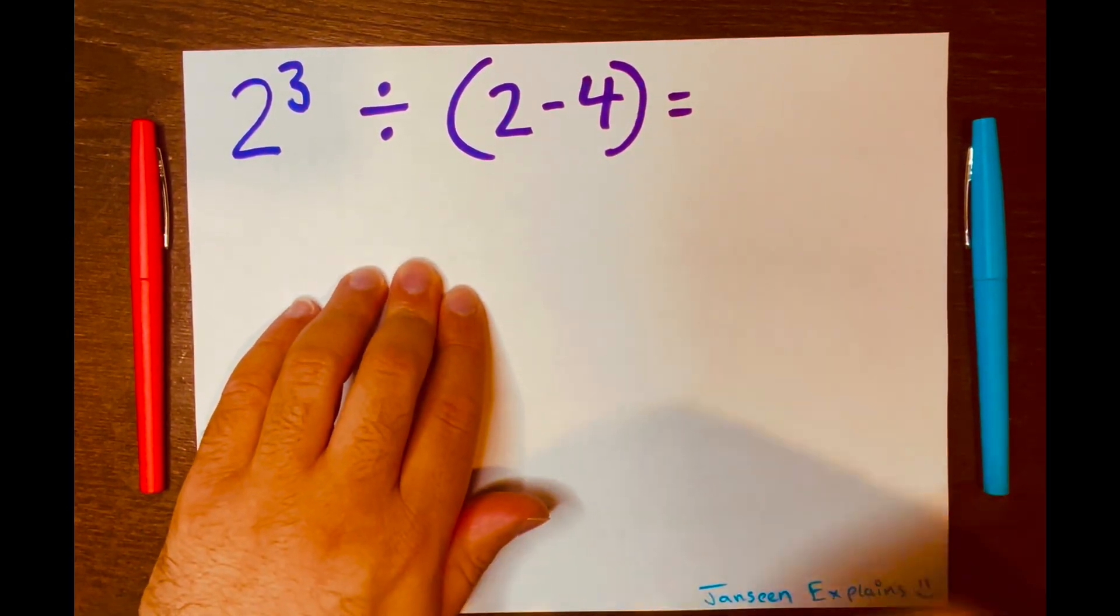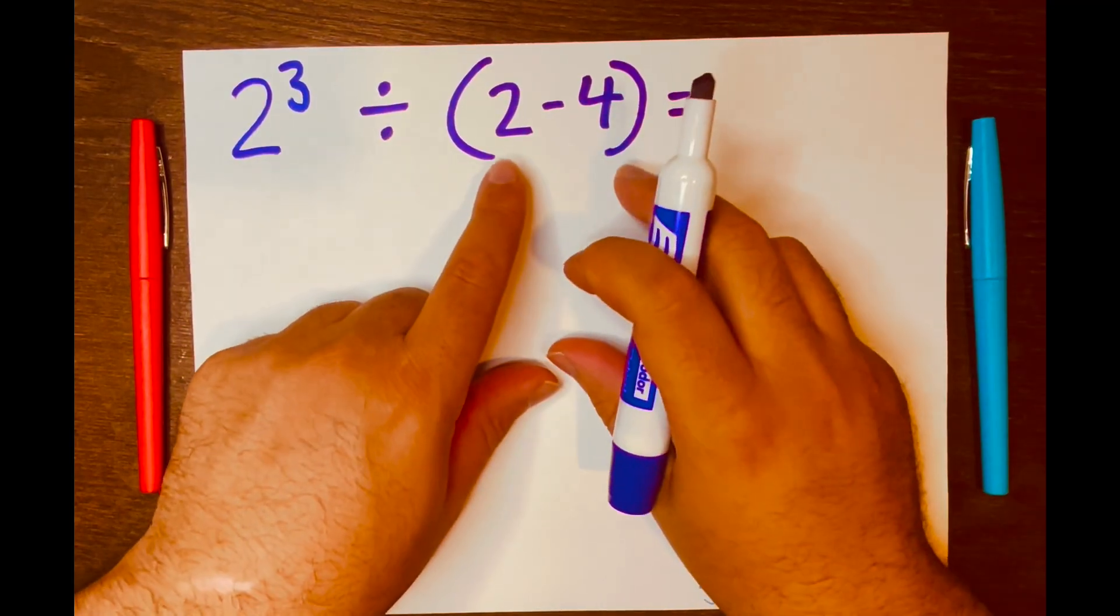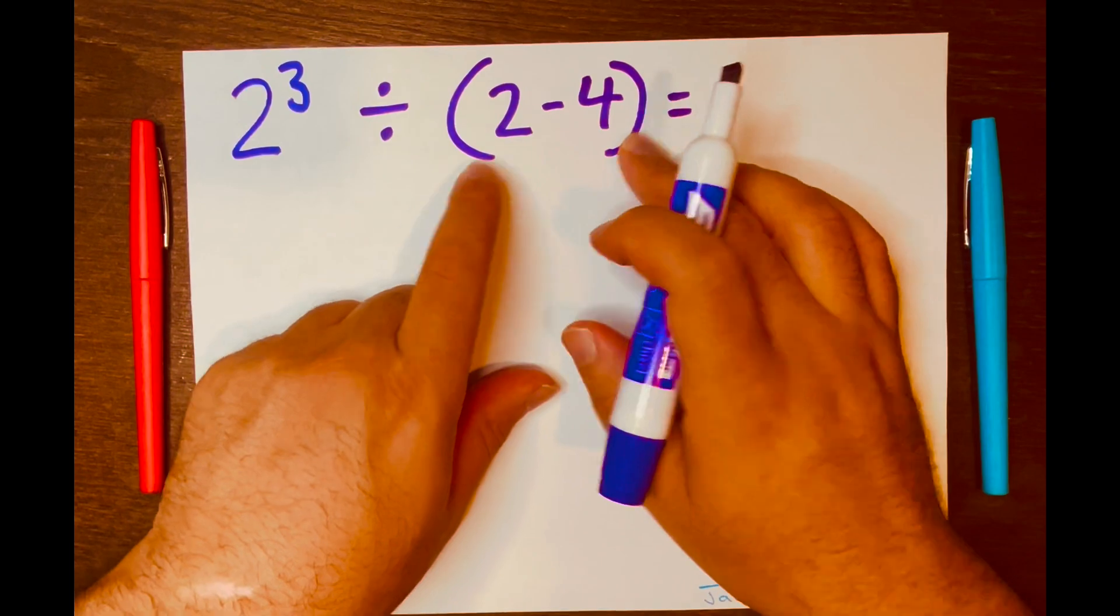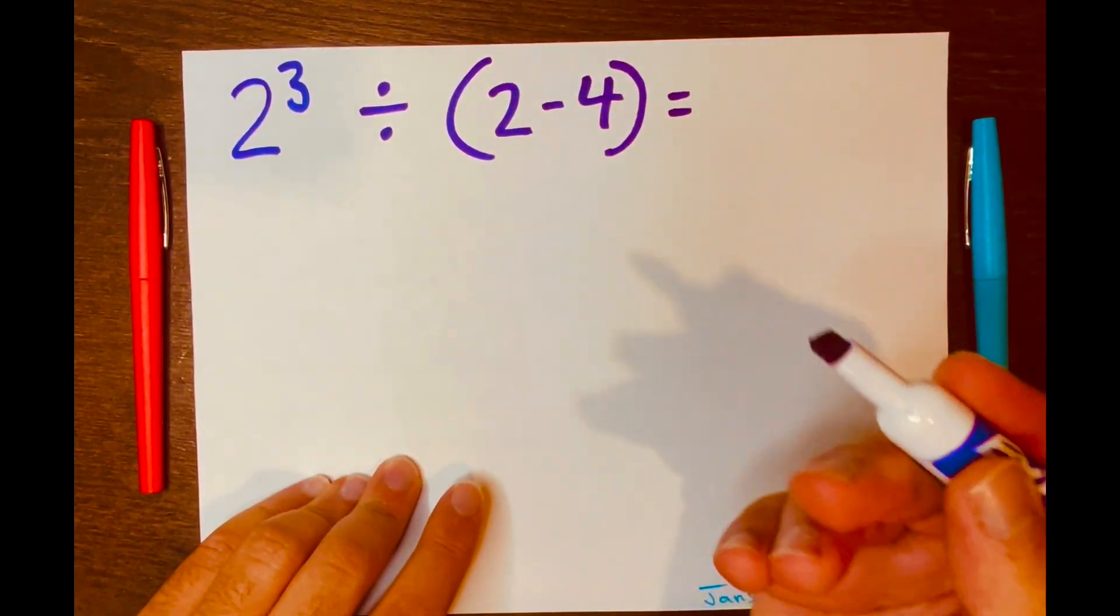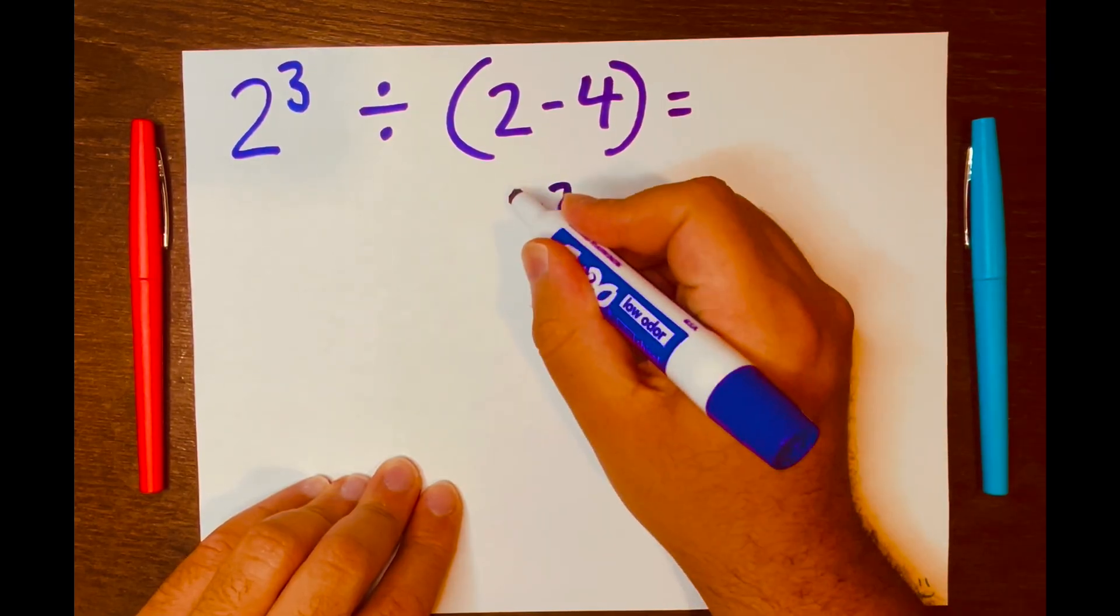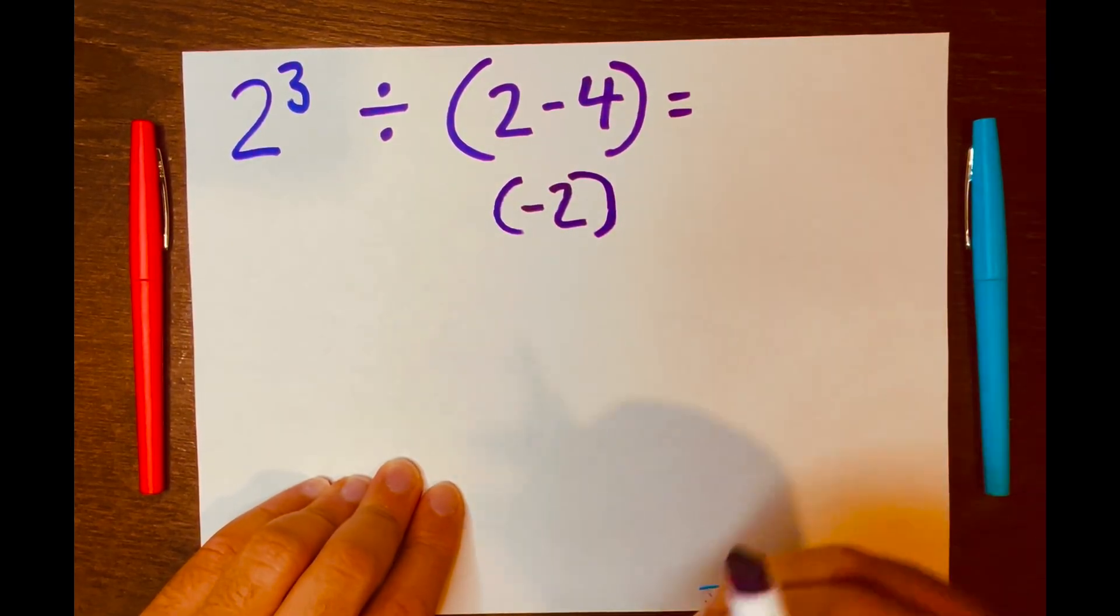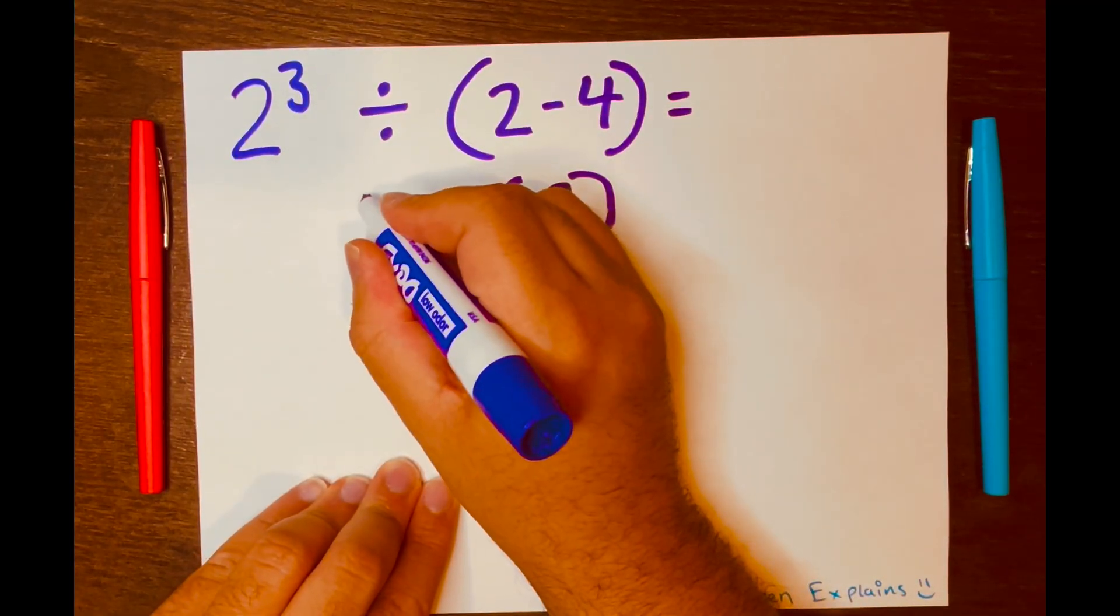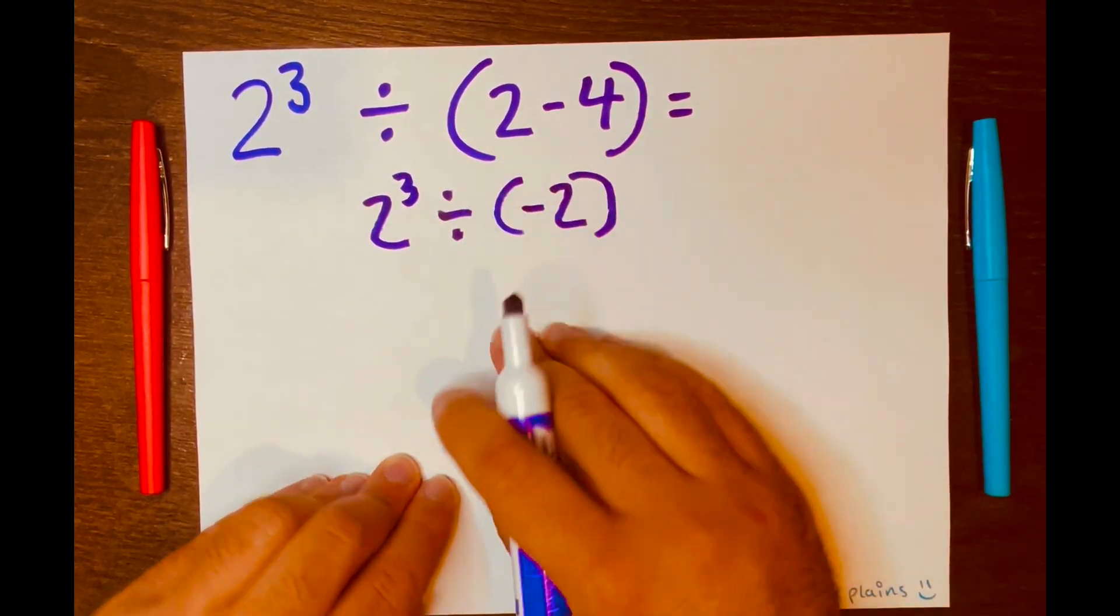I think of PEMDAS, and according to PEMDAS, it tells me to start with what's inside the parentheses, which is 2 minus 4. So let's go ahead and solve 2 minus 4, which equals negative 2, and I'll keep the parentheses, then I'll bring down the division symbol and the 2 to the power of 3.